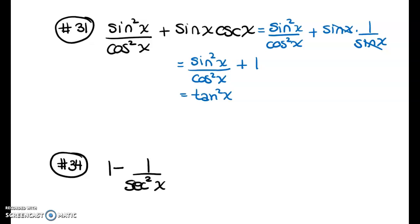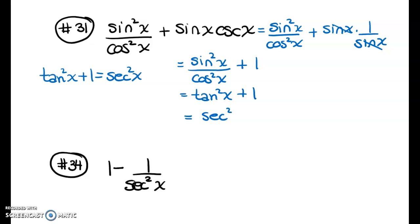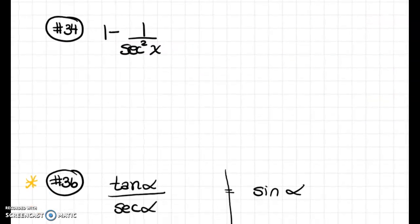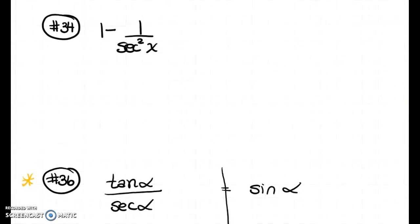I recognize that sin²x / cos²x equals tangent squared x, and I know the Pythagorean identity tan²x + 1 = sec²x. So this expression simplifies down to secant squared of x — one trigonometric function raised to a power.